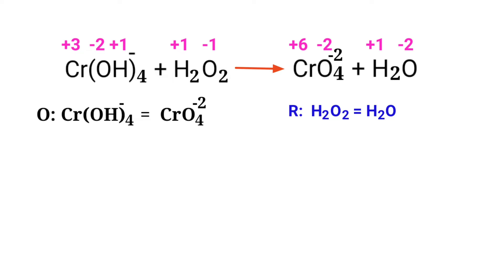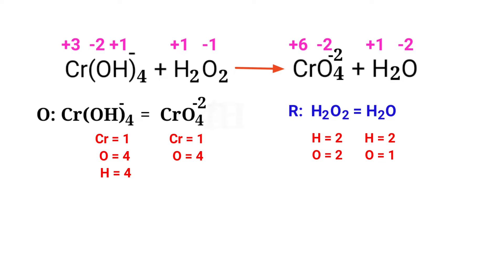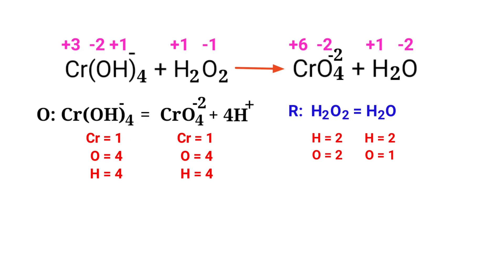Now balance the number of atoms in the two half reactions. In the oxidation half reaction, to balance the hydrogen atoms, you can produce H⁺ ions. Now the number of atoms are balanced in the oxidation half reaction.